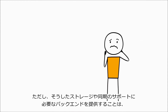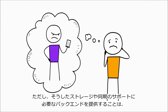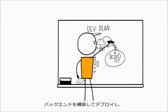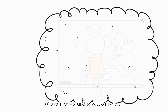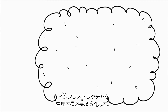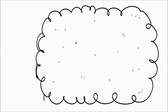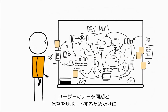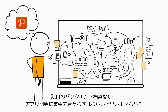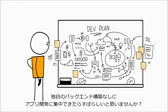But building the back end you need to support that kind of storage and synchronization is a lot of work. You have to build it, deploy it, and manage the infrastructure that it runs on. Wouldn't it be great if you could stay focused on writing your app without having to build your own back end just to support syncing and storing users' data?